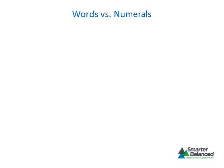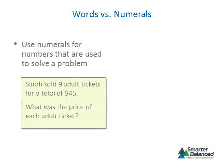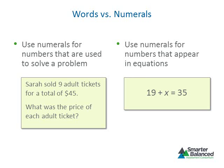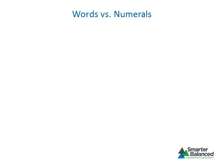Now let's look at the treatment of numbers. Always use numerals for numbers that are used to solve a problem. In the example, numerals should be used for 9 and for 45 because they must be used to solve the problem. Use numerals for numbers that appear in equations—for example, use numerals for 19 and 35 in the equation example. The Smarter Balanced Style Guide also directs item writers to use words for numbers that appear as the first word in a sentence.